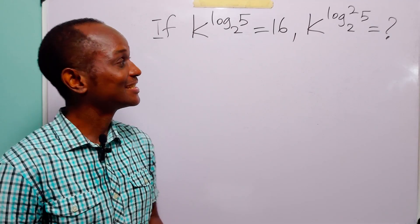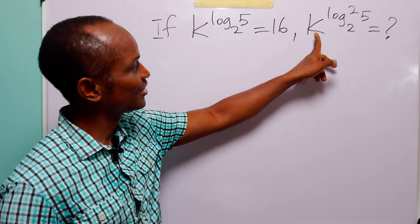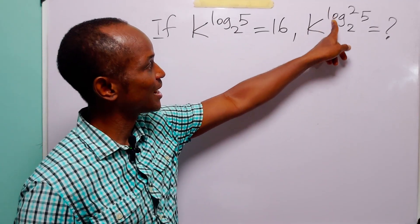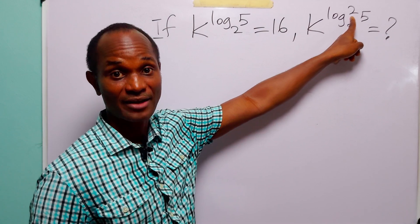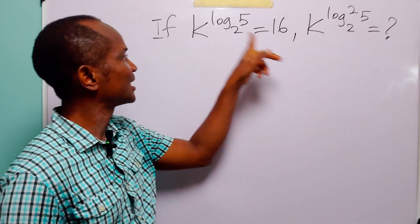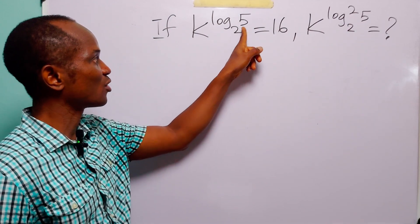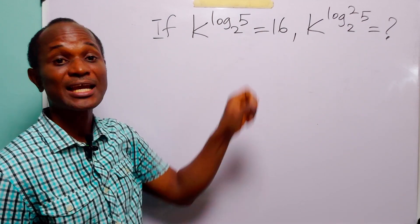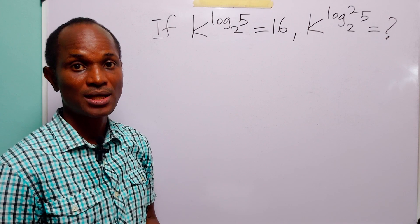Hello and welcome. In this math tutorial, our task is to find the value of k to the power log₂²(5), given that k to the power log₂(5) is equal to 16.